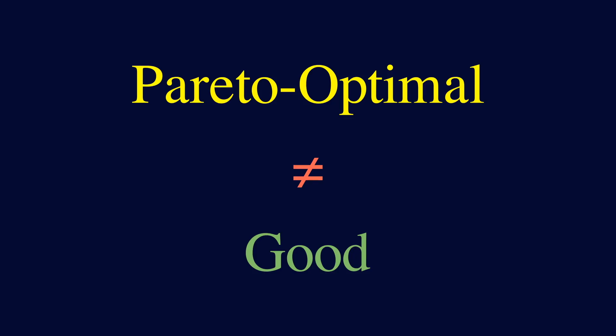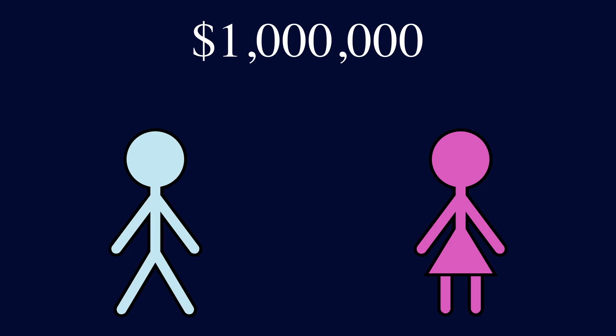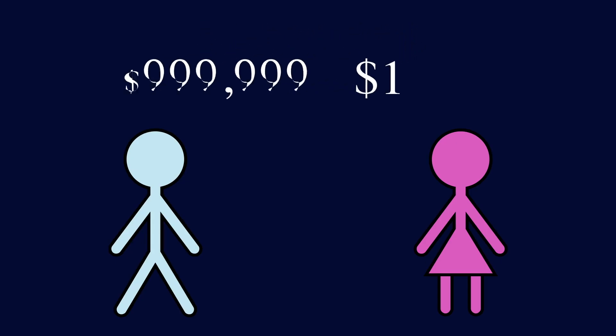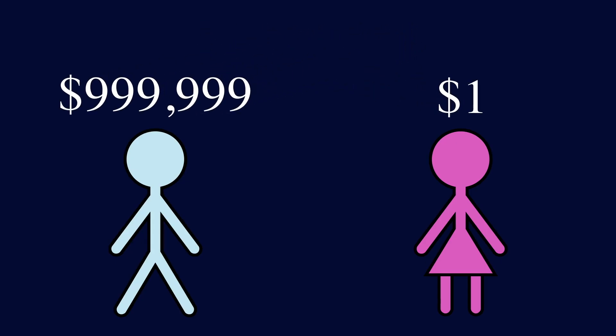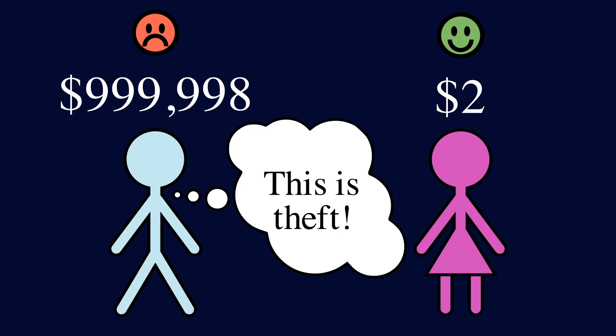But Pareto optimality is also not sufficient on its own — there are bad solutions that are Pareto optimal. To see this, suppose we have Alice and Bob, and a million dollars to divide between them. Alice only gets a dollar, and the rest goes to Bob. This is Pareto optimal, because in order to make Alice happier, you have to take away money from Bob, which will make him less happy. This allocation is unfair to Alice, but Pareto optimality doesn't care about fairness.